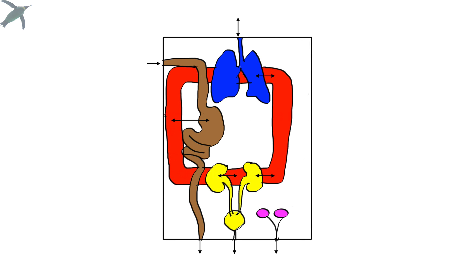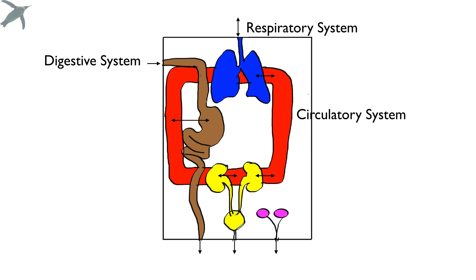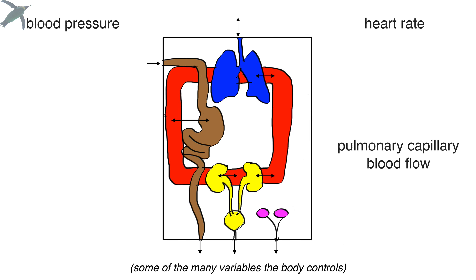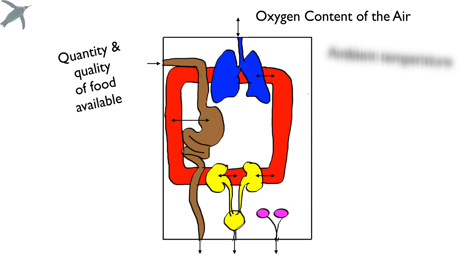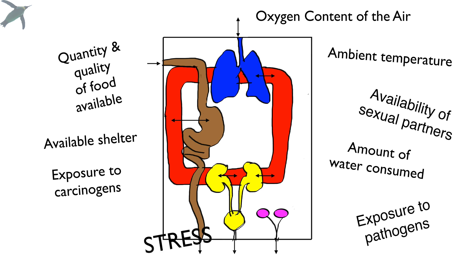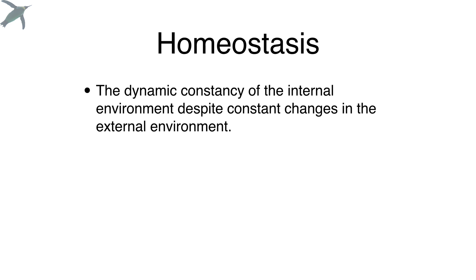Inside of you is you, and everything else is not you. As shown in my little cartoon of some body systems, there are so many variables that our bodies have to control all the time. We are living in an environment that is constantly changing, and this presents a lot of challenges for the body — to maintain an internal environment that's relatively constant despite all of this chaos around us.